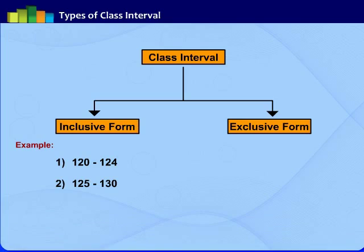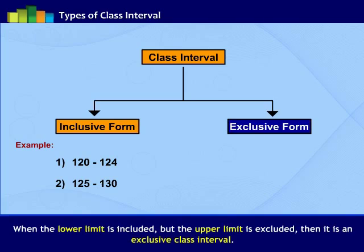Now, let us understand the second type that is exclusive form. When the lower limit is included but the upper limit is excluded, then it is an exclusive class interval. For example, in the first class, 120 to 125, 120 is included,